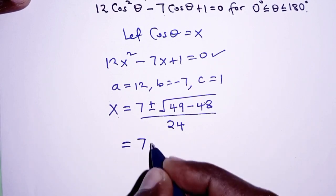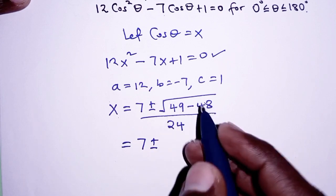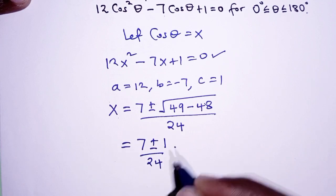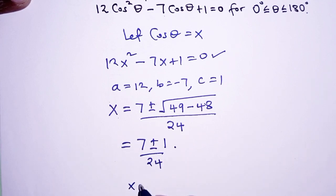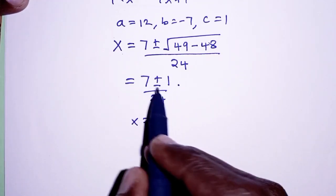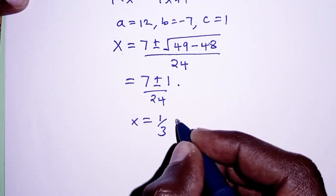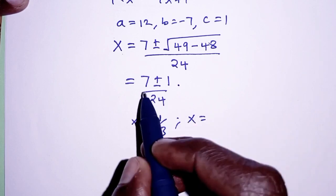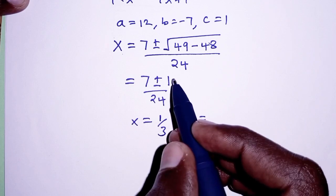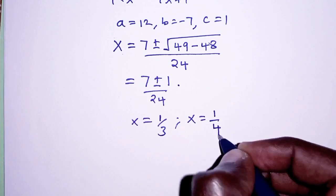On the denominator we have twice a, that is 2 times 12 which is 24. This simplifies further to 7 plus or minus the square root of 49 minus 48, which is 1, and the square root of 1 is 1, over 24. The first value of x is 7 plus 1 which is 8 over 24, that is one third. The next value of x is 7 minus 1 which is 6 over 24, that is one quarter.